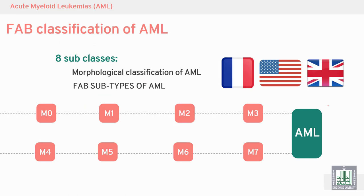In the 1970s, the FAB classification of acute myeloid leukemia was started. They classified acute myeloid leukemia into 8 subclasses, starting from M0 and ending with M7.